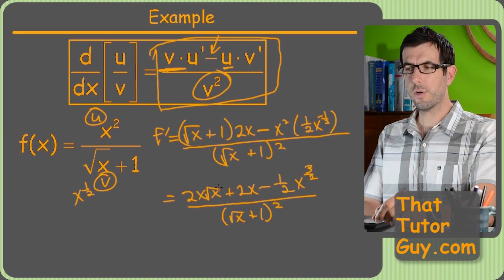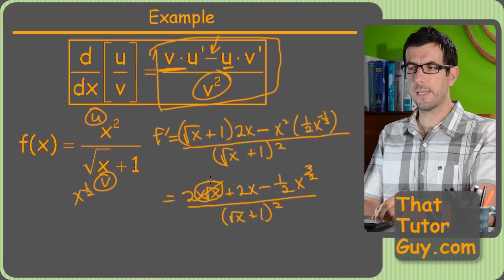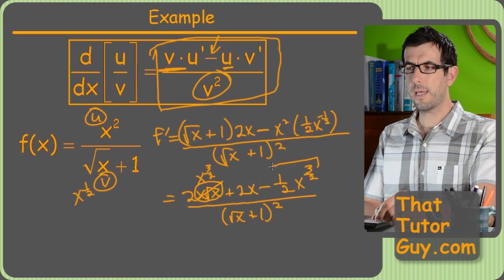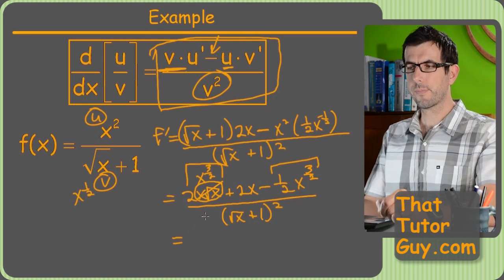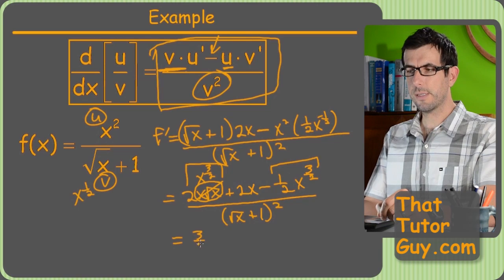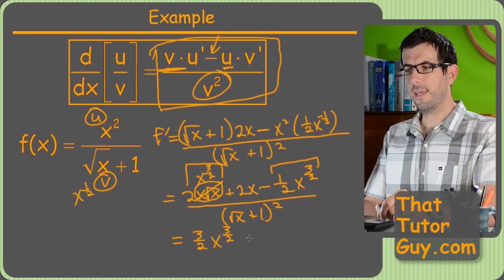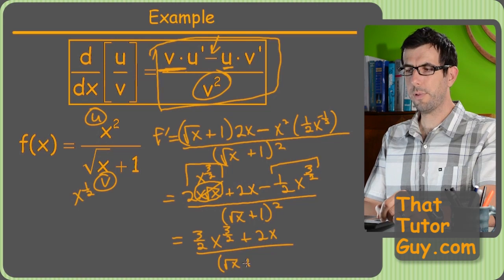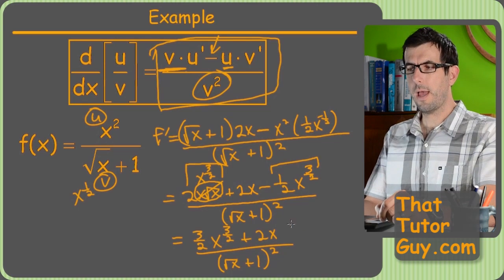So we're not actually done yet, because if you look real close, this is actually another X to three halves power. Because this is 2X root X, which is X to three halves. So that means that this guy and this guy are like terms. So that's what we're going to do. 2X to three halves minus one half X to three halves is going to give us three halves X to three halves, which I know is really confusing looking. And then we'll add 2X, and that'll all be over square root of X plus one squared.